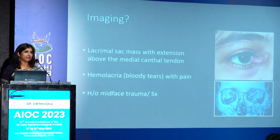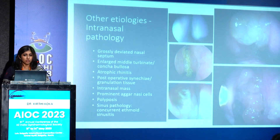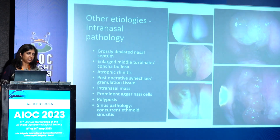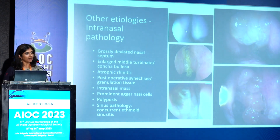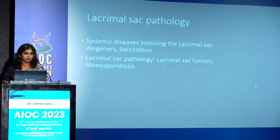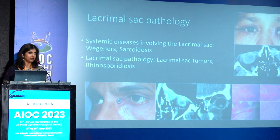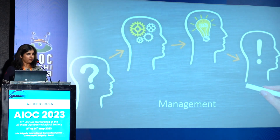For patients with suspected sac pathology, sac mass, or road traffic accident trauma, imaging helps find out why surgery failed in the first place. Nasal endoscopic examination is critical — sometimes a deviated septum is the cause of failure and needs correction before revision DCR. One may also find atrophic rhinitis, granulomas, polyps, nasal masses, sarcoidosis, Wegener's granulomatosis mimicking dacryocystitis, or even a lacrimal sac tumor. Always keep all these in mind.